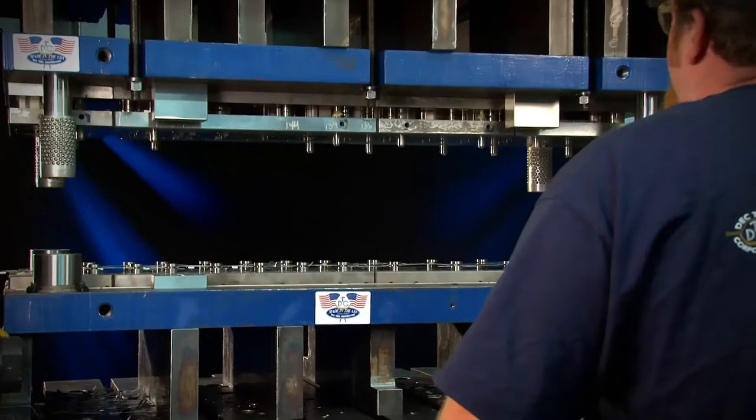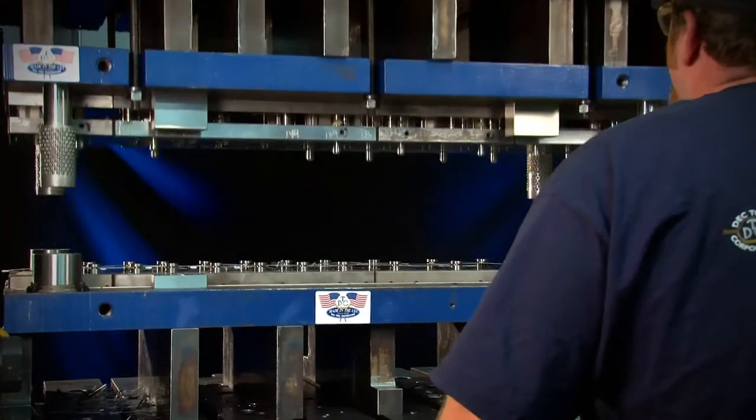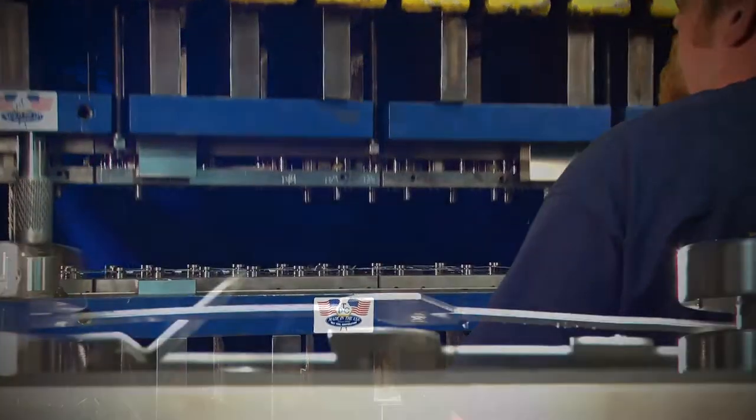During the stamping operation, slugs expand into these precision grooves, which prevents them from pulling back up to the top of the dye block and onto the dye surface where they can cause damage to the strip, the final part, even to the dye itself.